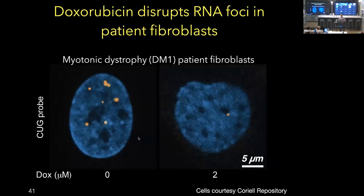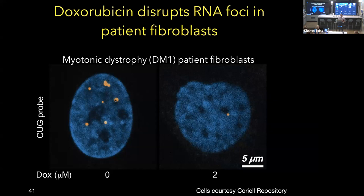This ability to perturb interactions may provide ways to break these aggregates in cells. Here's one example using Doxorubicin, an intercalator that destabilizes DNA-DNA and RNA-RNA base pairs. When we treat cells from myotonic dystrophy type 1 patient fibroblasts — in untreated cells we observe a certain number of foci — treatment with a low dose of Doxorubicin results in about a 90% reduction in foci number and size, providing proof of principle that modulating base pairing may be a route to disassemble these bodies.